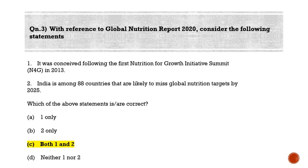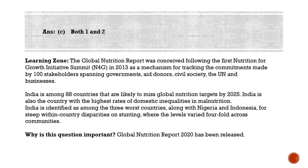The correct answer is option C — both statements are correct. The Global Nutrition Report is a report card on the world's nutrition, globally, regionally, and country by country, and on efforts to improve it. It is an independently produced annual stock-take of the state of world's nutrition — a multi-stakeholder initiative consisting of a stakeholder group, independent expert group, and report secretariat. It is not published by any well-known organizations like WHO or FAO; it is an independently produced document conceived at the first Nutrition for Growth Initiative summit (N4G) in 2013.